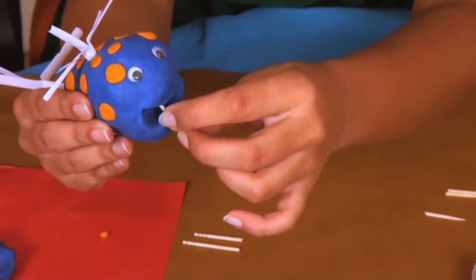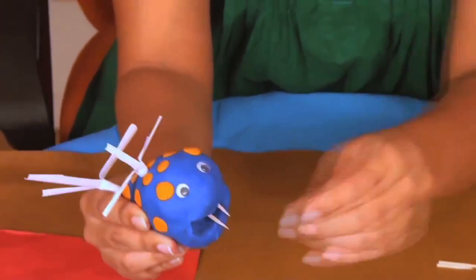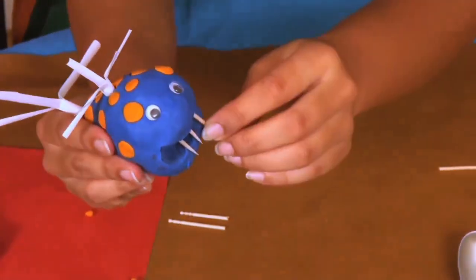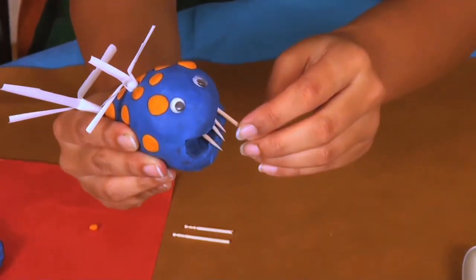Then take the pointed half of the toothpicks and poke them into the whale's mouth to make the sharp teeth. Whoa, the whale's slowly looking dangerous.